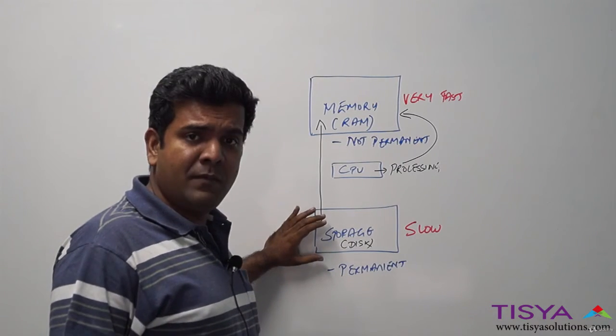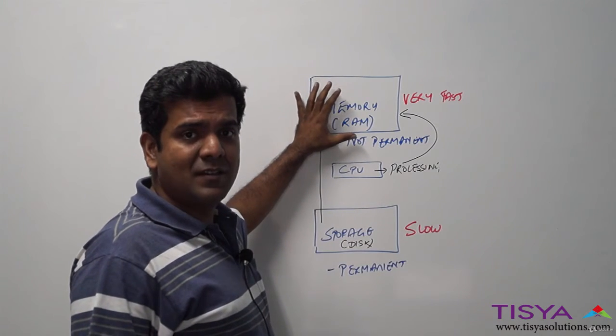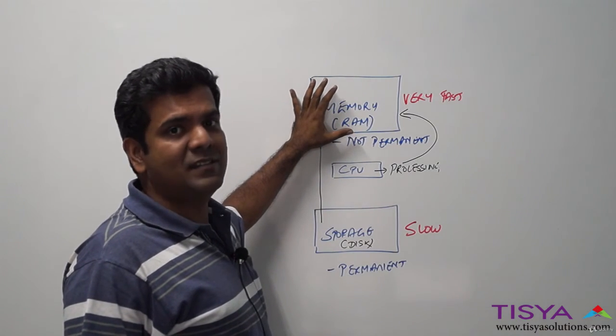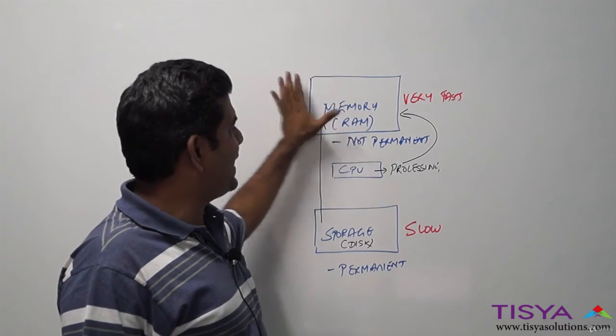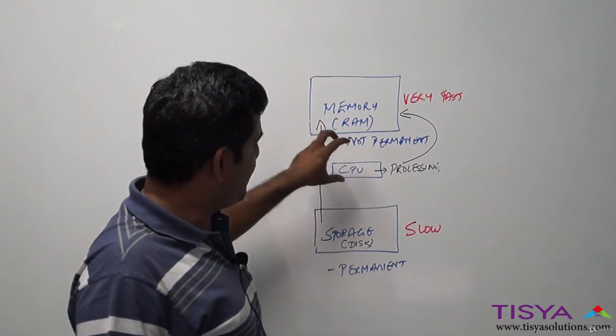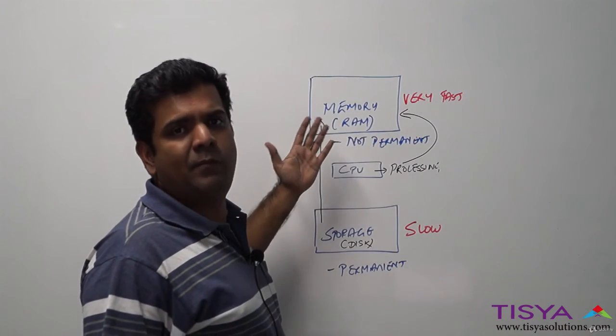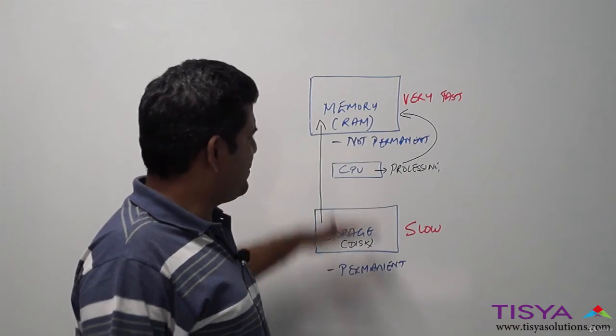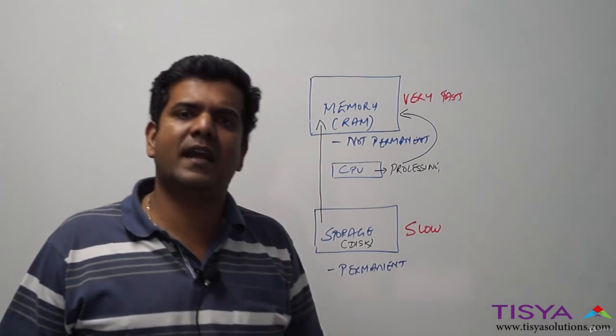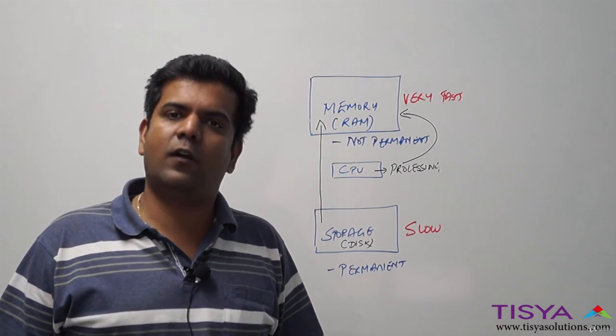To quickly summarize: storage is permanent but it is slow, memory is very fast but is not persistent. The processor makes use of the contents in the memory to do any kind of processing. This becomes a foundation for you to understand the Oracle database architecture, which you will understand over the next set of videos that follow.